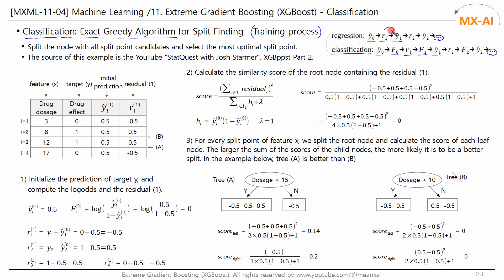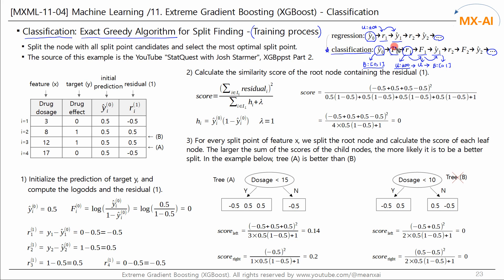In regression, Y hat is directly estimated from the residuals. But in classification, log odds is estimated first from the residuals, and then Y hat is estimated from the log odds. This is because in classification, Y hat is bounded to 0 and 1, while Y in regression is unbounded from negative infinity to positive infinity. In classification, the residuals are unbounded, so we cannot directly estimate the bounded Y value from them. Therefore, we first estimate the unbounded log odds F, and then use the logistic function to convert the log odds to Y hat. For this reason, classification is a bit more complex than regression.